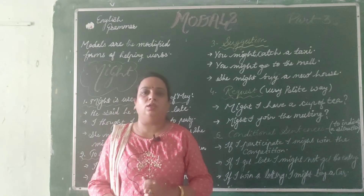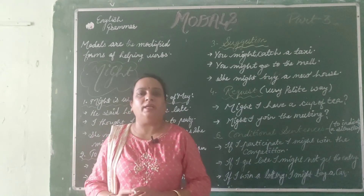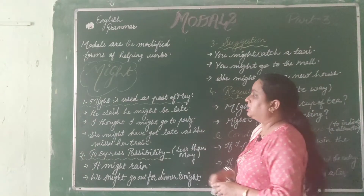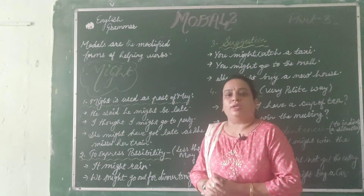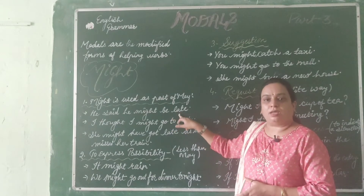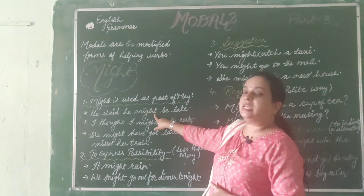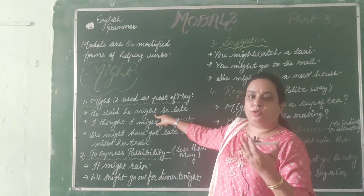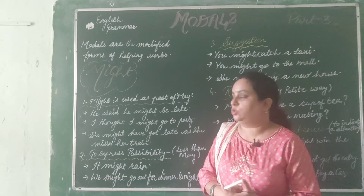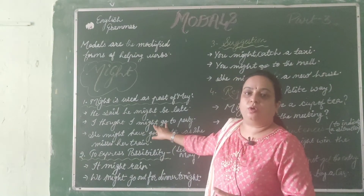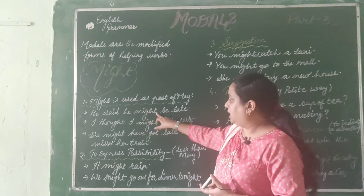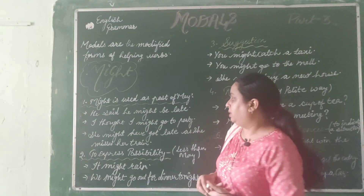Now let us learn the use of might. Might is the past form of may. The first use is might as past of may. For example, 'He said he might be late' — this is a statement in past context. 'I thought I might go to the party' — here too I am talking about a past situation. Both sentences use might as the past form of may.